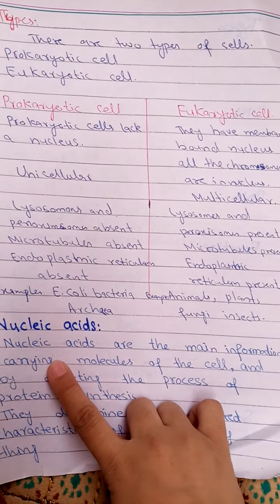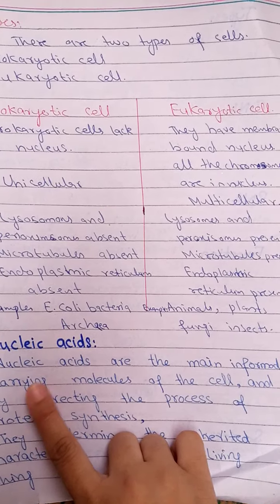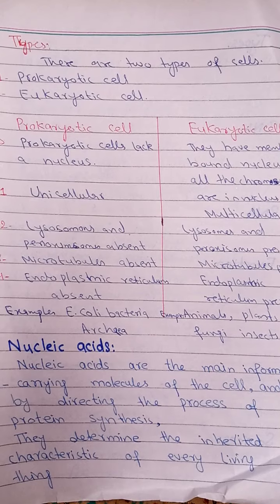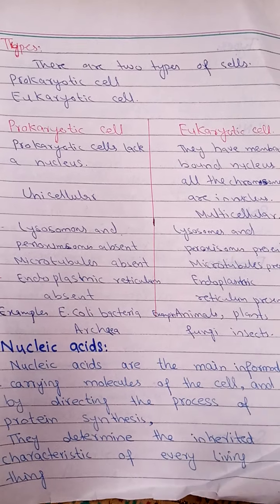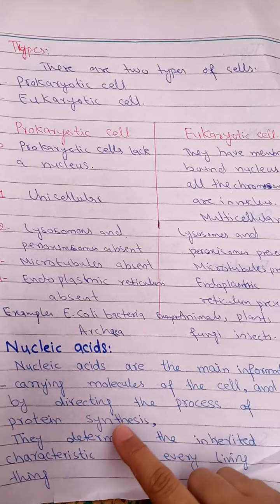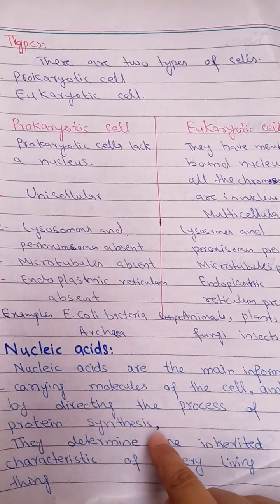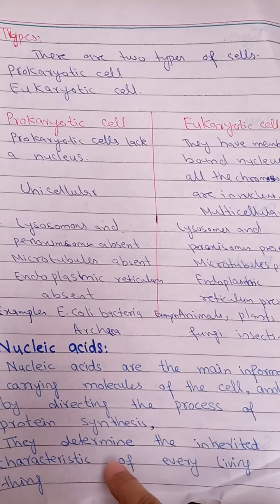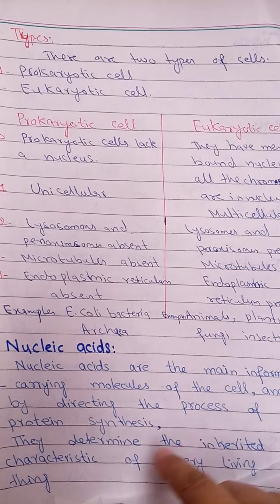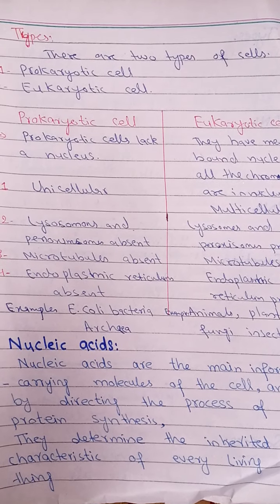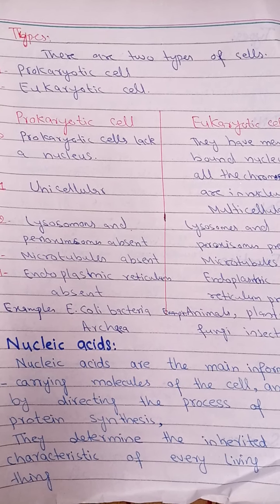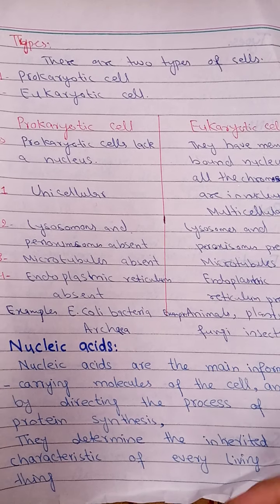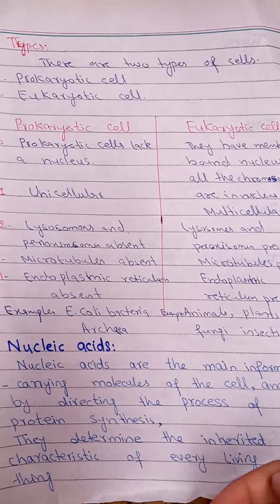Now let's go to nucleic acid. Nucleic acids are the main information-carrying molecules of the cell. They direct the process of protein synthesis and determine the inherited characteristics of every living thing.